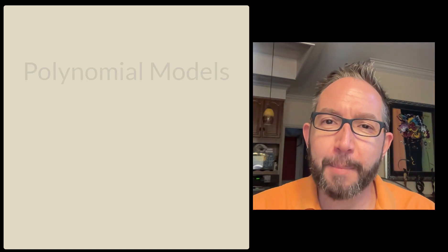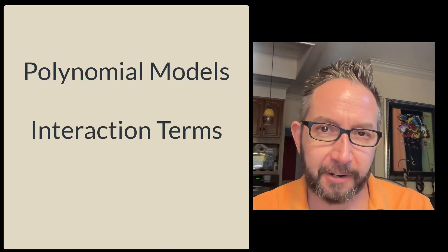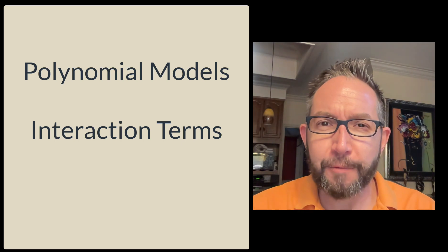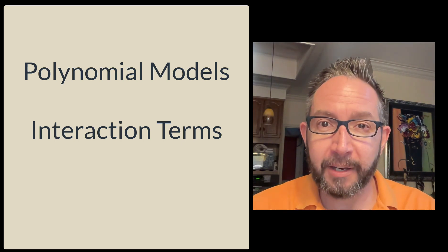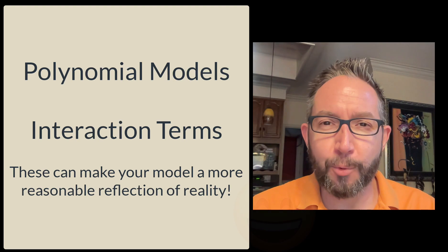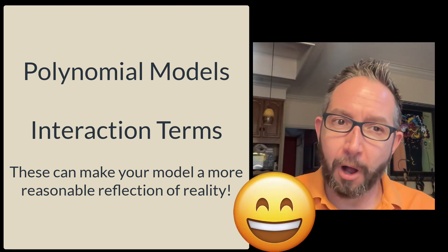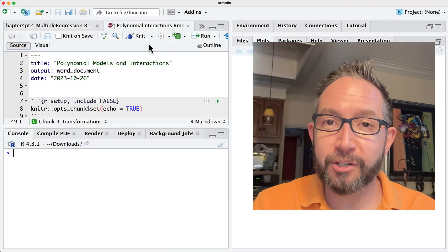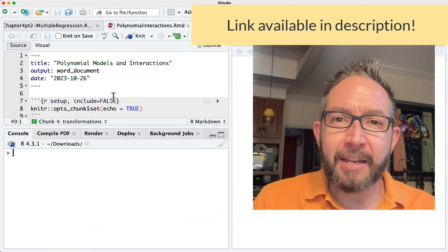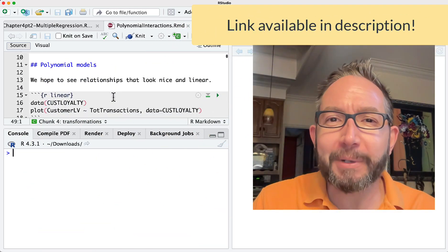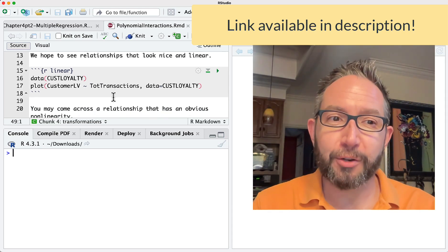In this video I want to talk about polynomial models and adding interaction variables to your regression model — two very useful things to add to the analytics toolkit in order to make our regressions more reasonable reflections of reality. I'll be working from the polynomial interactions RMD, link is in the description. Let's review what we would like to see when we actually try to do a regression model.